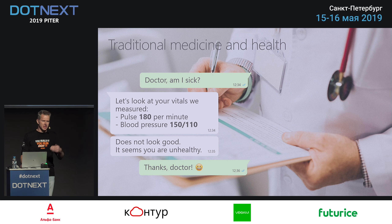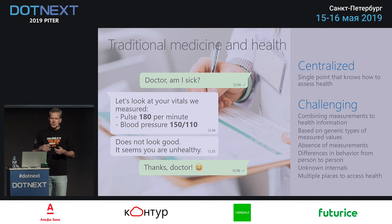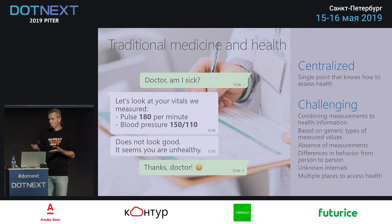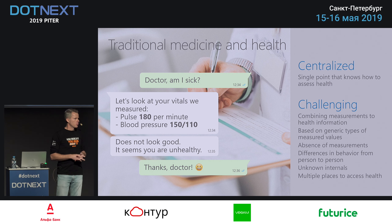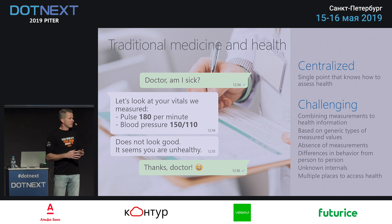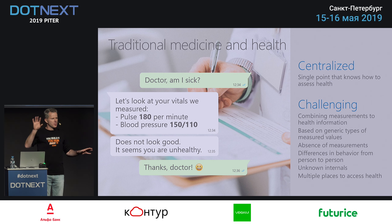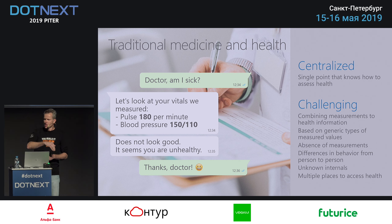This is how telemetry and metrics work — you send them to someone and they make a decision. That's challenging because the information you give is usually generic. You don't want to give very specific information because every part of the system has other types of relevant data. And if you want to make educated health decisions, you need to know the internals, not just external metrics. It would also scatter the decision logic across multiple places.